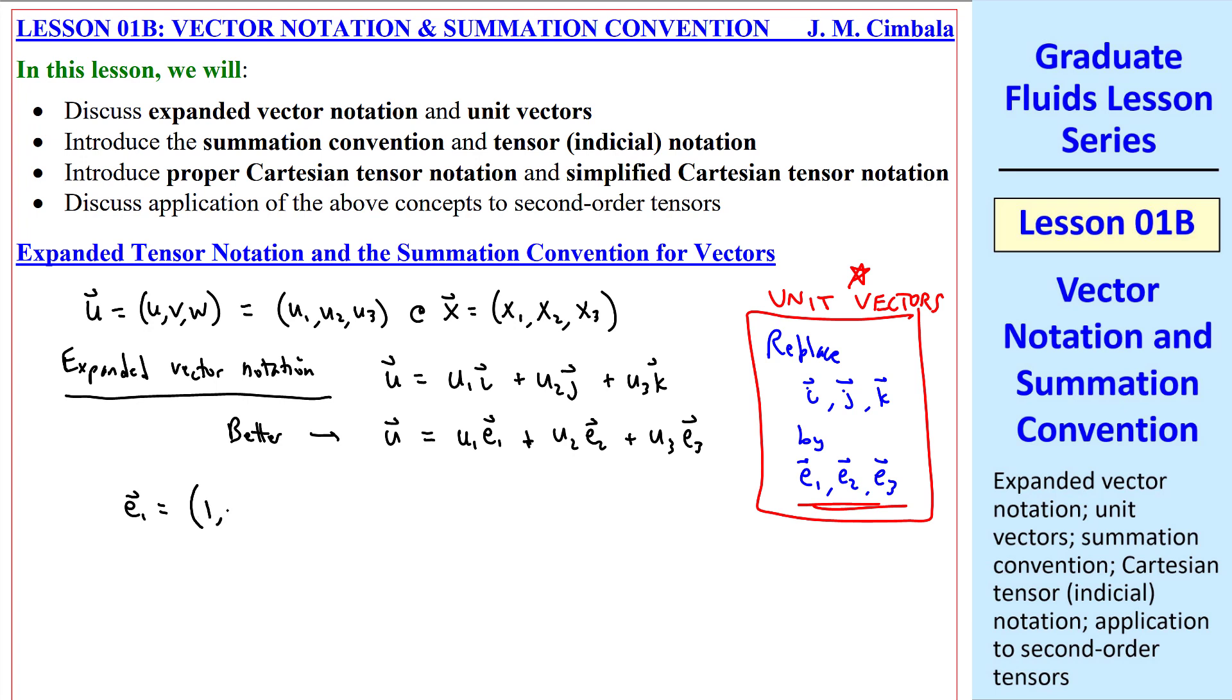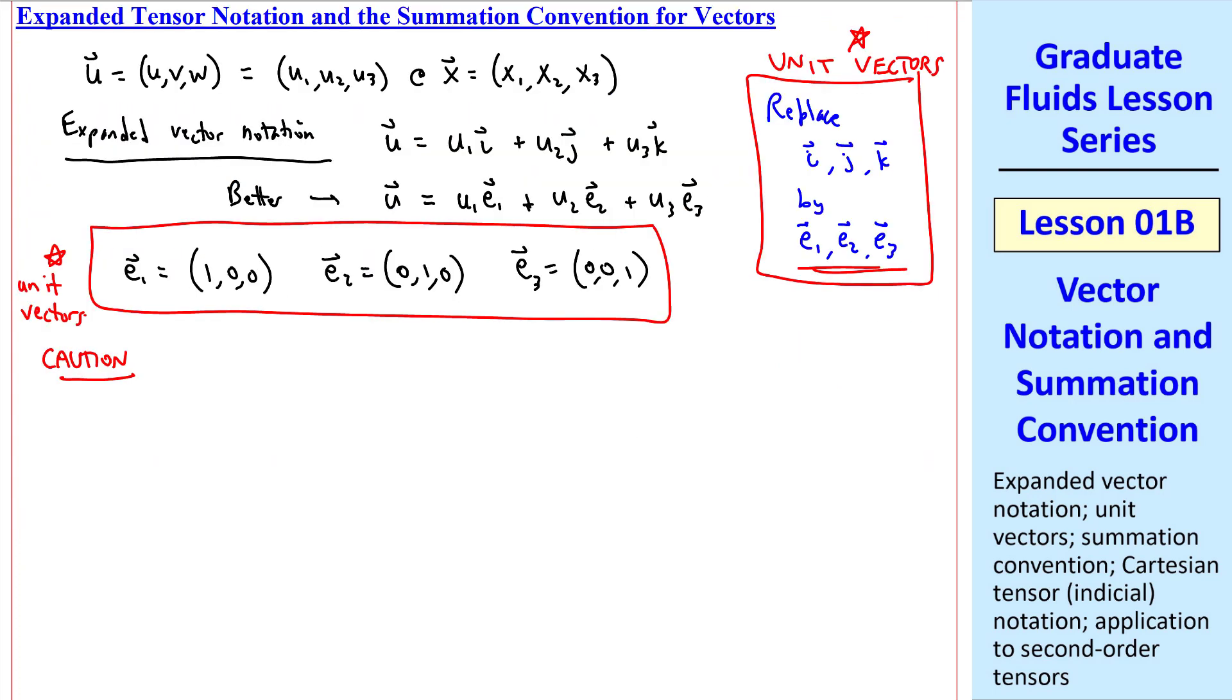Expand it out. e1 is just 1, 0, 0. Likewise, e2 is 0, 1, 0, and e3 is 0, 0, 1. These are all in Cartesian coordinates, by the way. We'll get used to using these as our unit vectors instead of i, j, k.